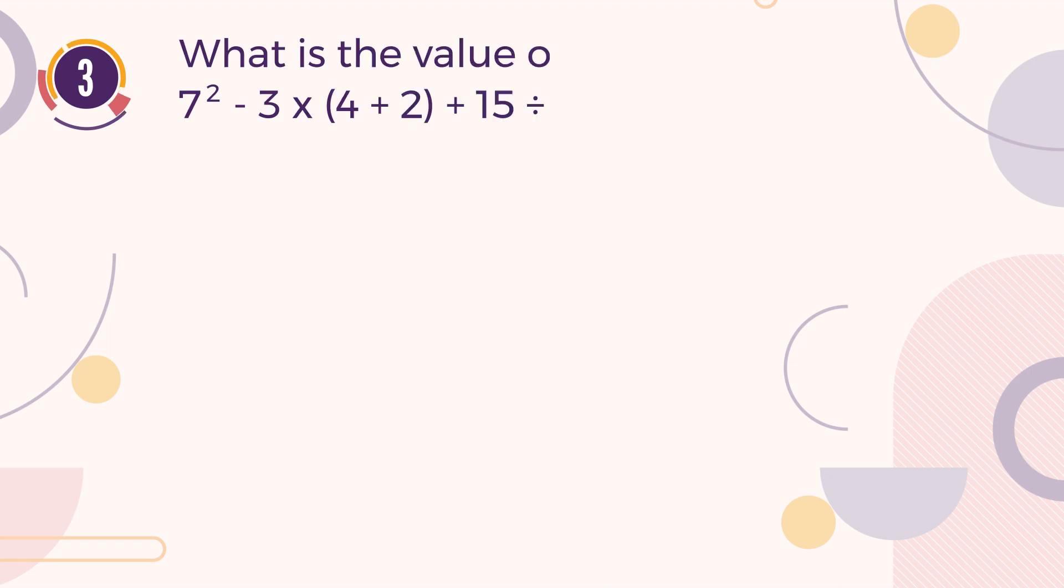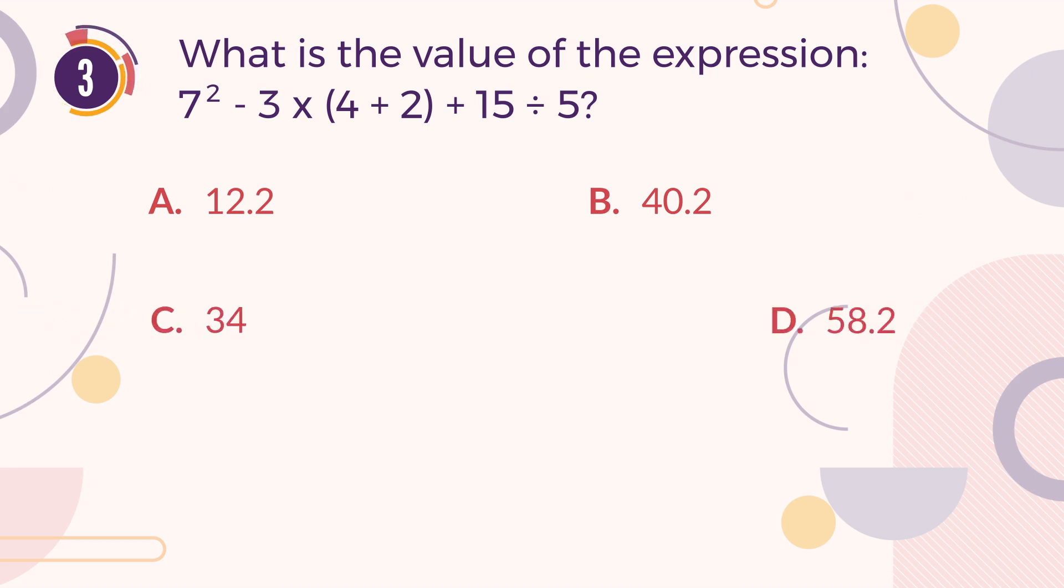Number 3. What is the value of the expression: 7 squared minus 3 multiplied by the sum of 4 and 2, then plus 15 divided by 5. A. 12.2. B. 40.2. C. 34. D. 58.2.